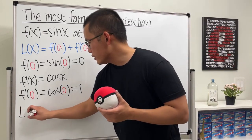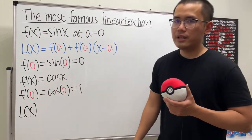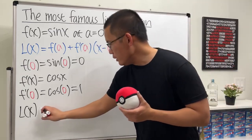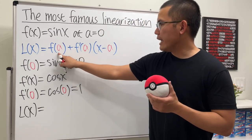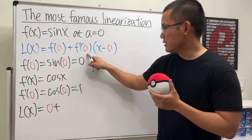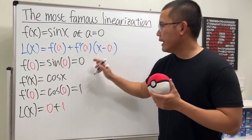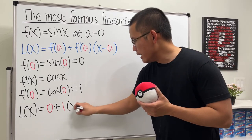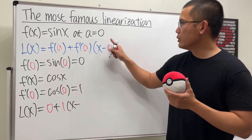And now we can just plug everything in. So let's see what we get, ladies and gentlemen. The linearization L(x) equals f(a), which is zero, and then we add the slope, which is one, and we multiply by x minus a, which is zero.